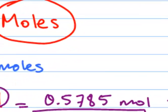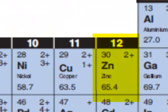So if we look at our periodic table, and we've got zinc right here, it's 65.4 grams per mole.